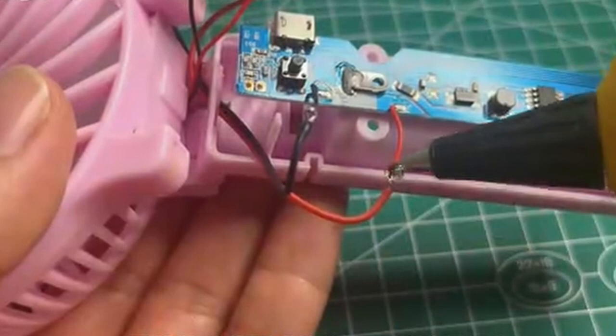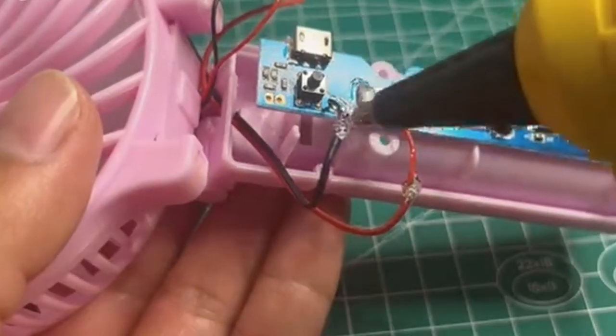Now for safety, use a hot glue gun to secure all the connection points of wires where we just connected.